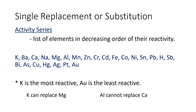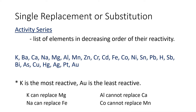Potassium can replace magnesium in a single replacement reaction because K is more reactive than magnesium. Aluminum cannot replace calcium because calcium is more reactive than aluminum. Sodium can replace iron because sodium is more reactive than iron. Cobalt cannot replace manganese because cobalt is less reactive than manganese. If a metal cannot replace the metal of the ionic compound, the reaction will not occur.